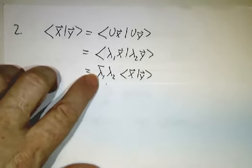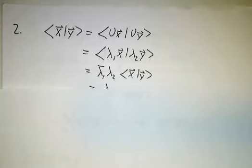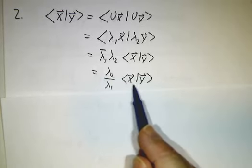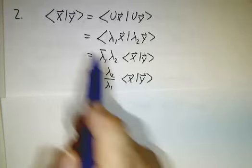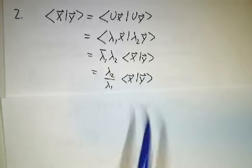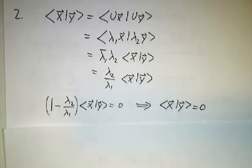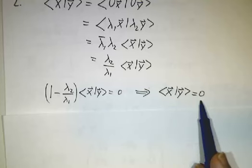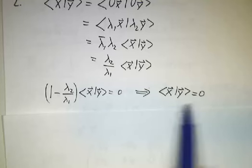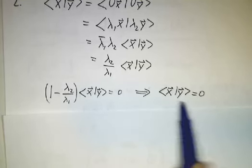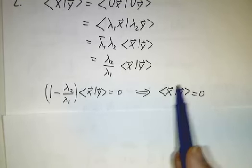But remember, λ1 is a unit complex number. So λ1 bar is the same thing as 1 over λ1. So this is λ2 over λ1 times the inner product of x with y. So the inner product of x with y is a number other than 1 times the inner product of x with y. And that means that the inner product of x with y has to be 0.